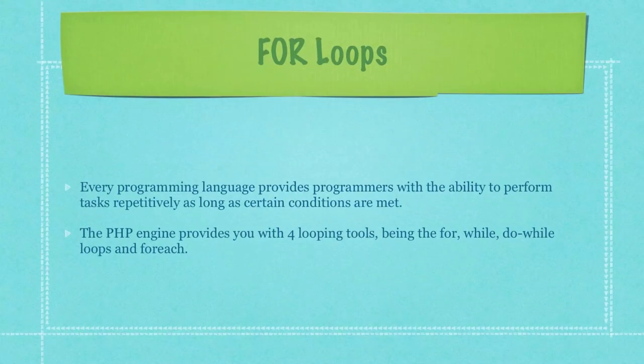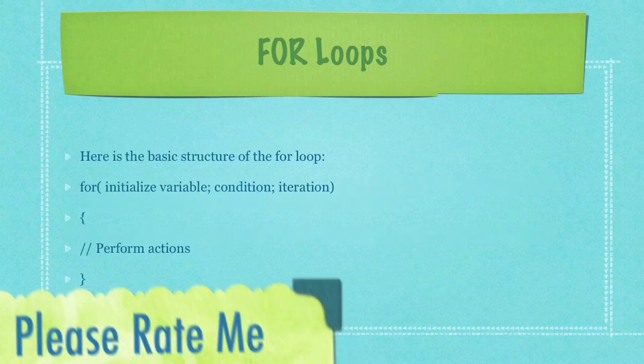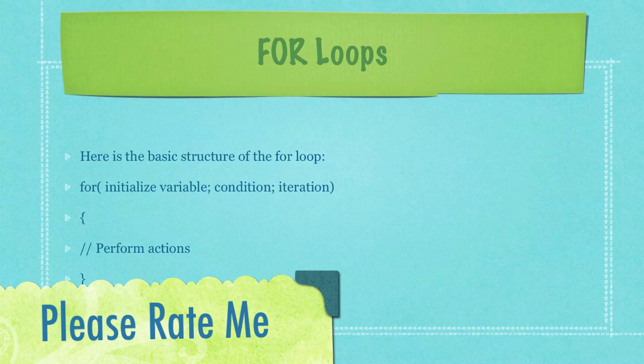Every programming language provides programmers with the ability to perform tasks repetitively as long as certain conditions are met. The PHP engine provides you with four looping tools: the for, while, do while, and for each. Here's the basic structure of the for loop.